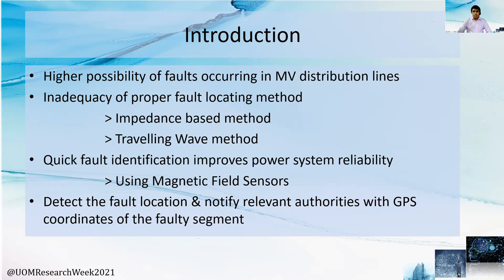In the impedance-based method, the impedance seen by two ends of the faulty line is calculated and the fault location is identified based on the impedance profile of the line. The traveling-wave method basically relies on the time taken by the faulty wave to reach the fault detectors.